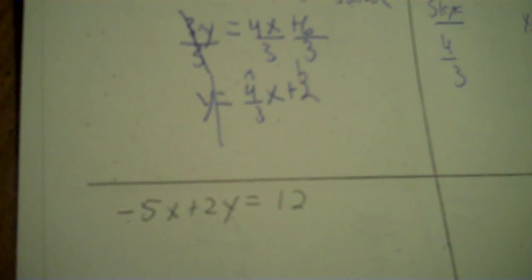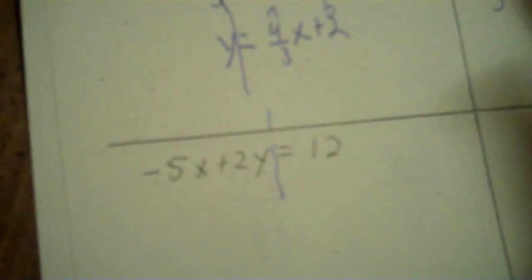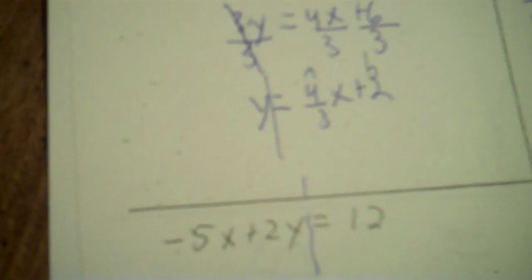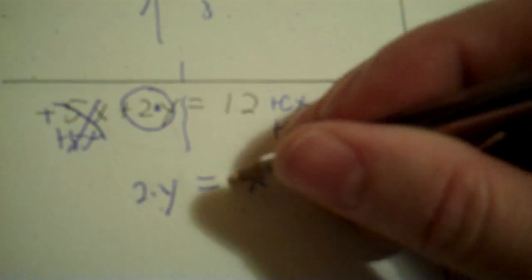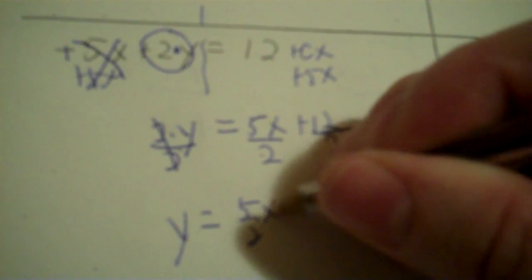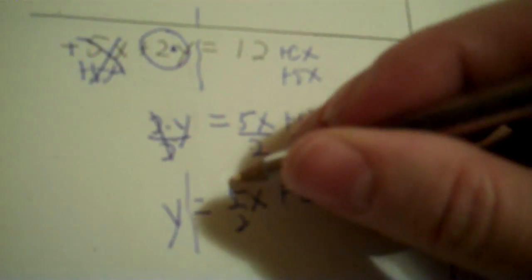Negative 5x plus 2y equals 12. So x has a negative 5, y has a 2. Dot your y, circle it. This has got to be y by itself because it's y equals mx plus b. So plus 5x, then make a 0x and add 5x: 0 plus 5 is 5, plus 12 — because you can't add an x to a number without an x. Then divide all three by 2: 5 divided by 2 is a decimal, so keep it 5 over 2x. 12 divided by 2 is 6. So slope is 5 over 2, y-intercept is plus 6.